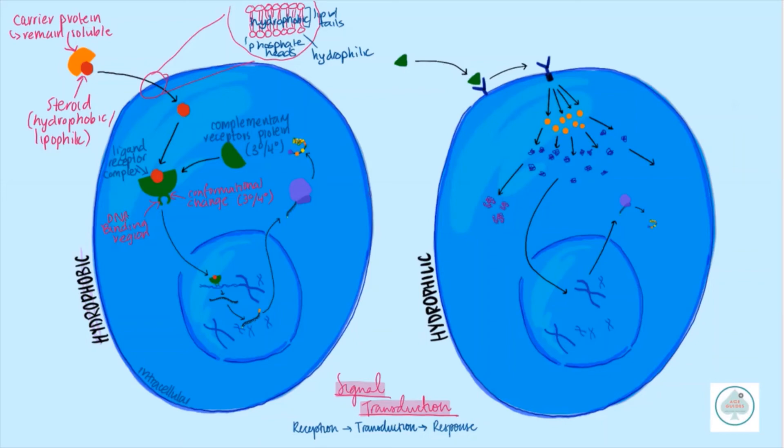There's a conformational change and that exposes a DNA binding region. At this point, we move into transduction—when the changes start occurring in the cell to come up to that ultimate response. What happens in this case, as we've got this DNA binding region, is this molecule then moves into the nucleus. What happens is gene expression.